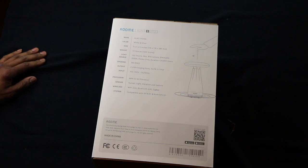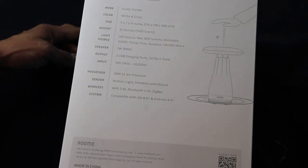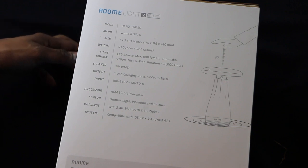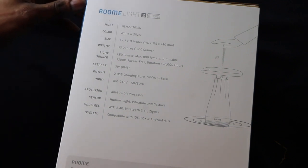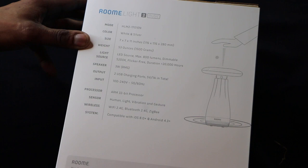So, specifications. The model is the HLM170EN, the color is white and silver. It's about 11 inches, weighs about 53 ounces. The Max Lumen is 800, and it has a dimmable 5200 Kelvin, flicker-free. It has a 20,000-hour light operation, a three-watt speaker, and two USB charging ports. It uses Wi-Fi 2.4 and Bluetooth 2.4 as well. It's compatible with iOS and Android devices.